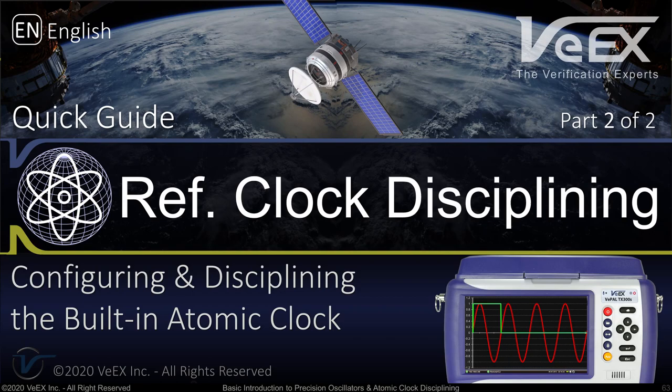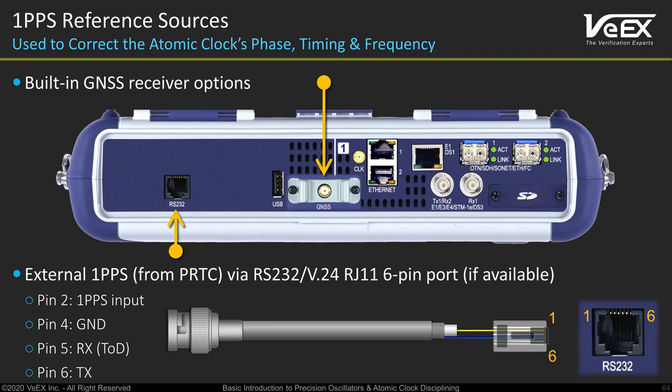Most information and material available about sync and timing are based on lab applications and experiences. In lab environments you have trusted and verified reference signals, and all sorts of instruments to monitor and confirm the health of such references. For field applications, on the other hand, your single instrument has to be very resourceful and provide as much information as possible about the worthiness of its local references. Some VX test sets offer different ways to discipline their internal atomic clocks — normally using the optional built-in GNSS receiver option, although some allow external cleaner 1 PPS reference signals from a PRTC.